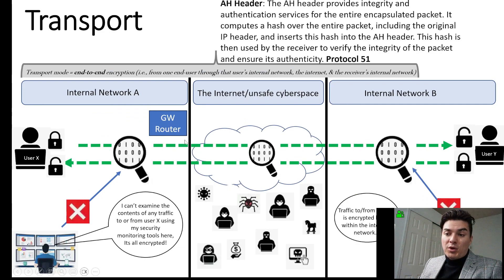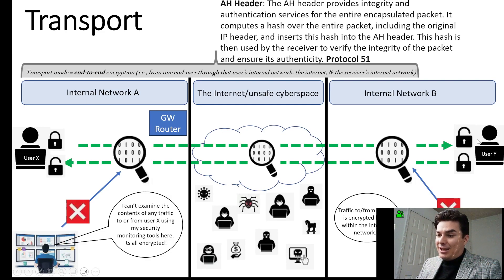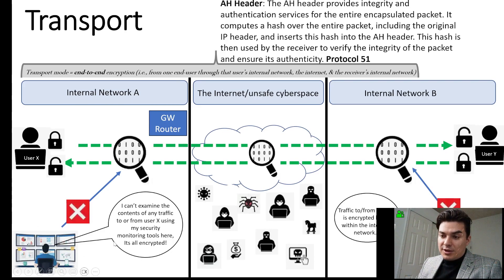Now in transport mode, it works a little bit differently. The connection gets encrypted at the end user all the way to the other end user — this is where it gets decrypted. So as it's passing through the entire local area network, none of the users on this local area network are able to read that traffic.